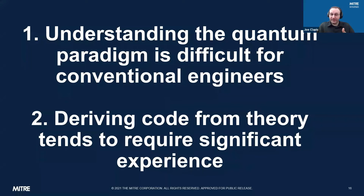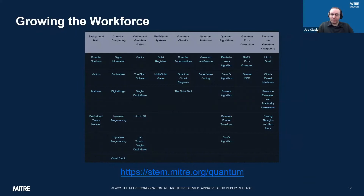For the first problem — quantum is difficult for conventional software engineers — we started by asking ourselves: knowing what we know now, if we had the opportunity to go back in time, how would we fast-track our old selves? How would we train ourselves with the concepts, tools, lessons learned, and gotchas of this whole space? To answer this, we compiled a collection of techniques, analogies, and general lessons learned from our past work and created a class out of it.